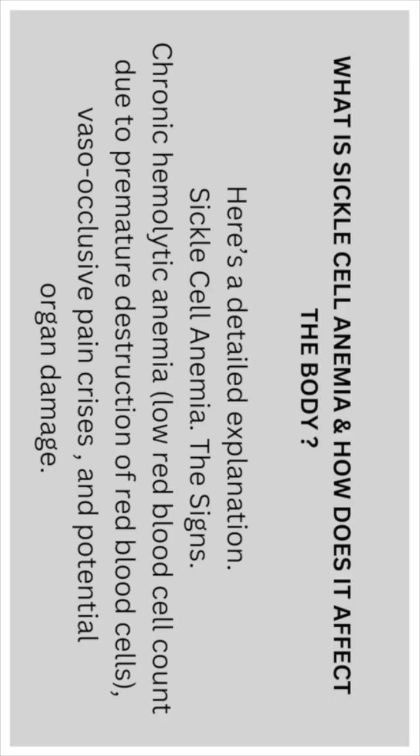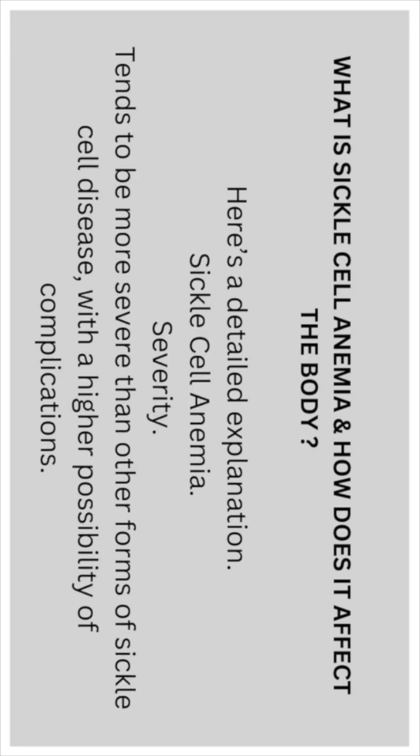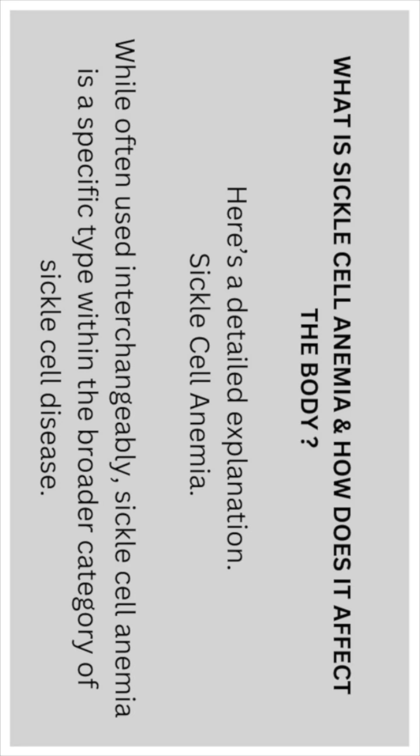The signs of sickle cell anemia include chronic hemolytic anemia, which is a low red blood cell count due to premature destruction of red blood cells, vaso-occlusive pain crises, and potential organ damage. It tends to be more severe than other forms of sickle cell disease with a higher possibility of complications. Though often used interchangeably, sickle cell anemia is a specific type within the broader category of sickle cell disease.